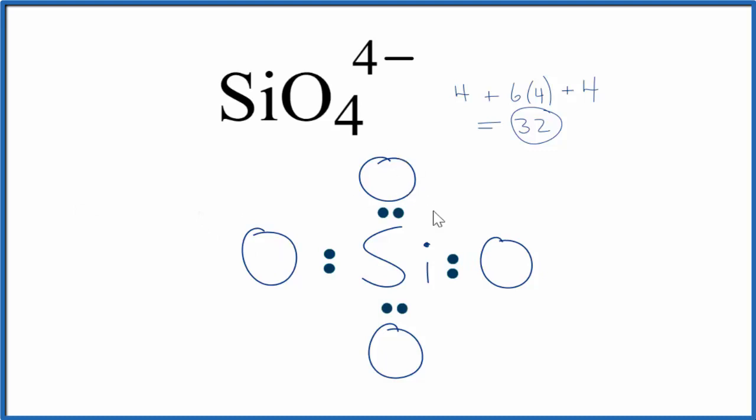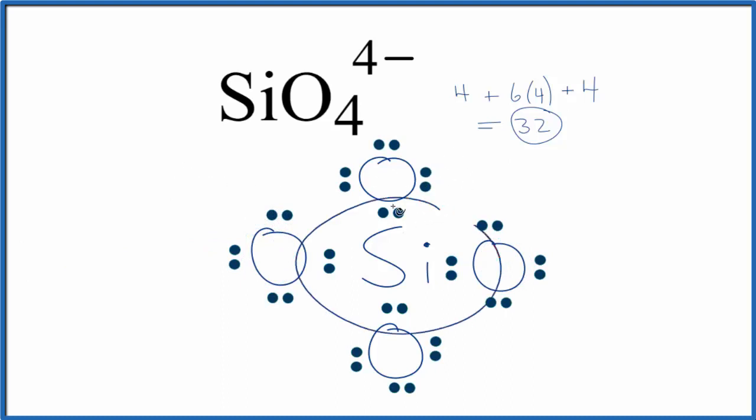Now let's complete the octets around the oxygen atoms until we've used all 32 valence electrons. So at this point, we've used 32 valence electrons. The Si has eight, and each oxygen atom has eight valence electrons. So that's all good.